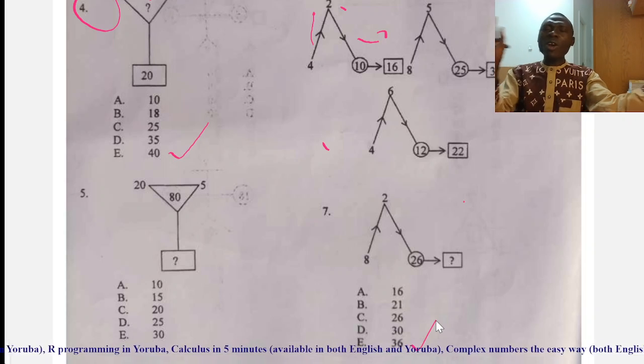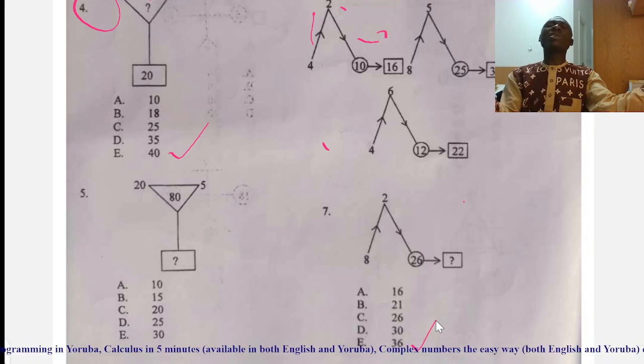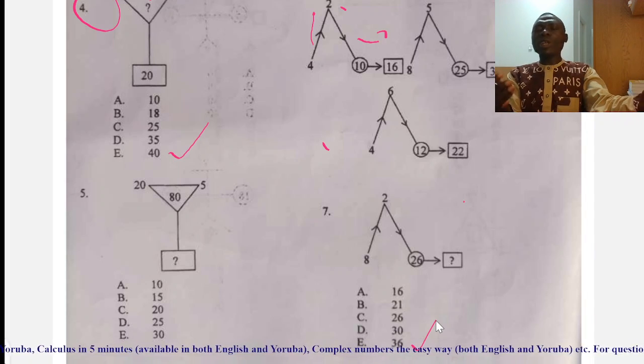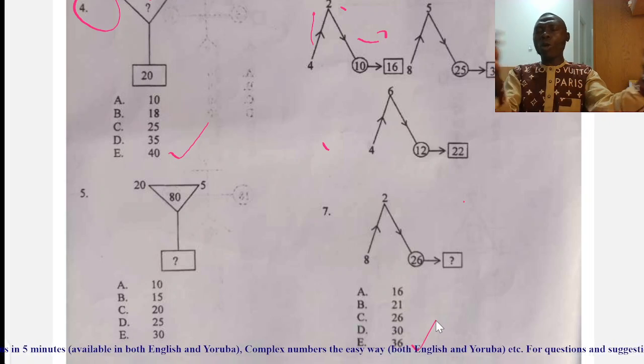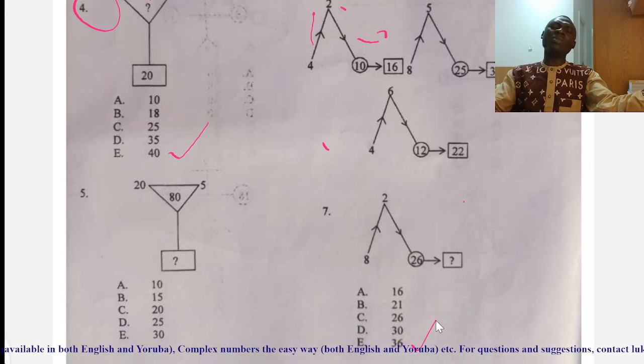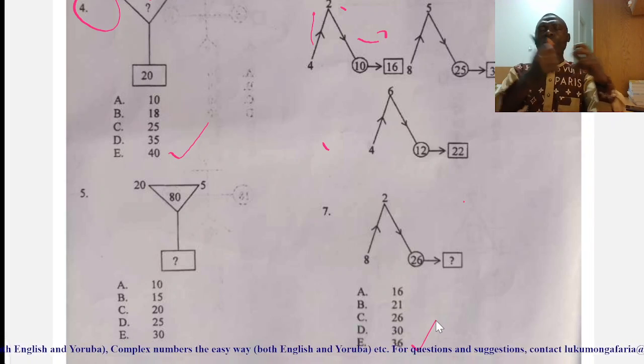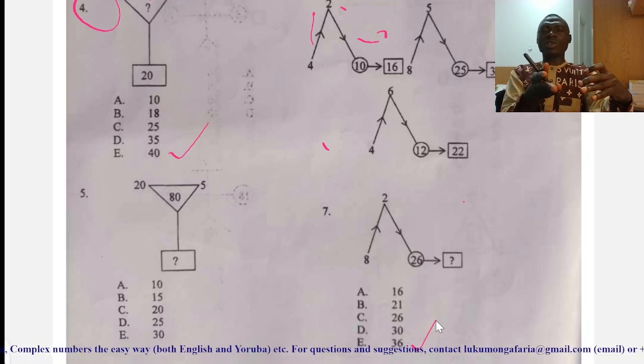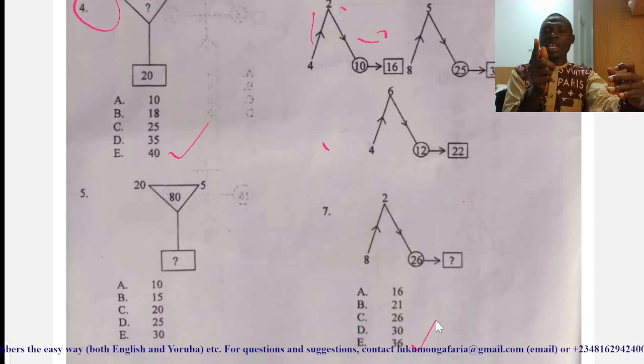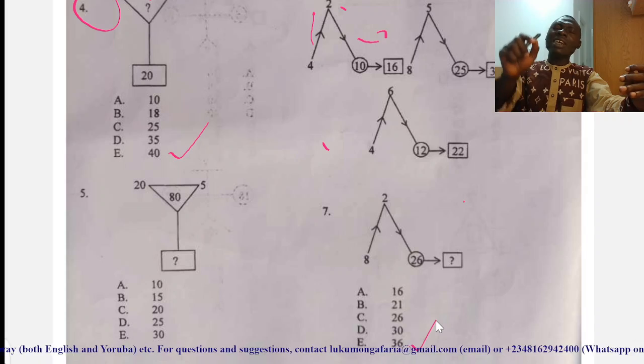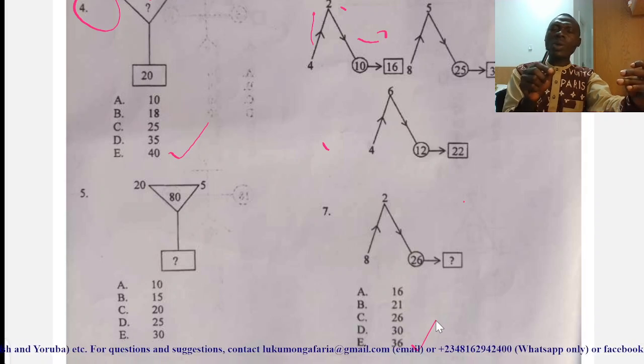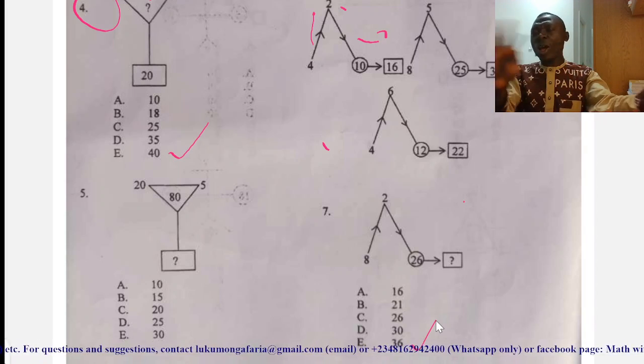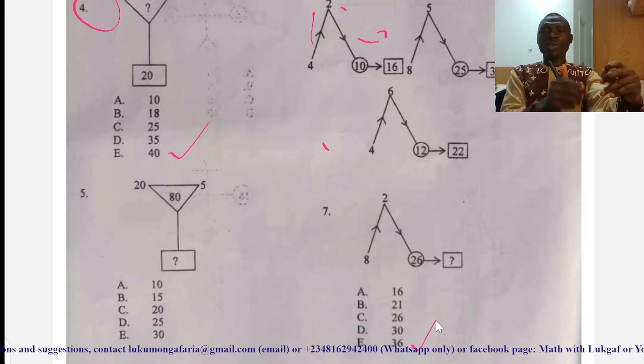The second thing is to think of any of the arithmetic rules, being it addition, subtraction, multiplication, or combination of two or three of them and see whether you are going to put them together to produce the results. And one thing you have to note is that if you are doing that, you have to ensure that the rules you are taking hold for all the examples you were given before you go to the question.